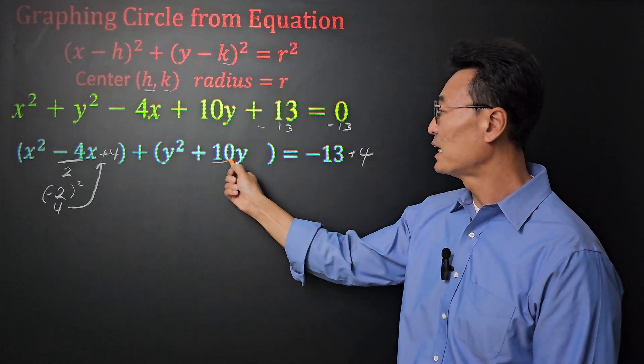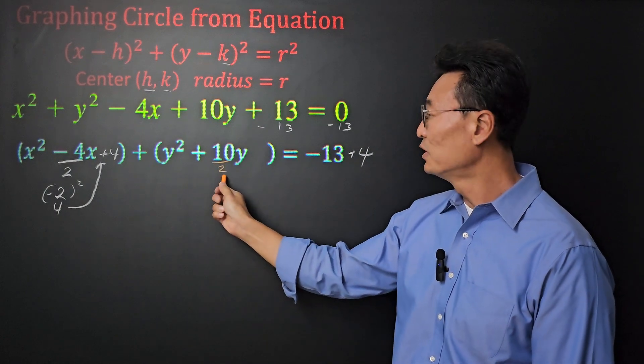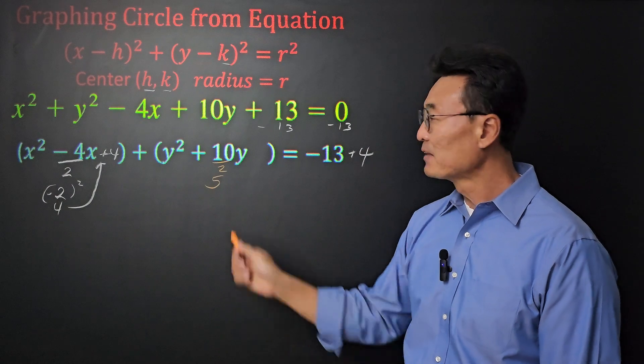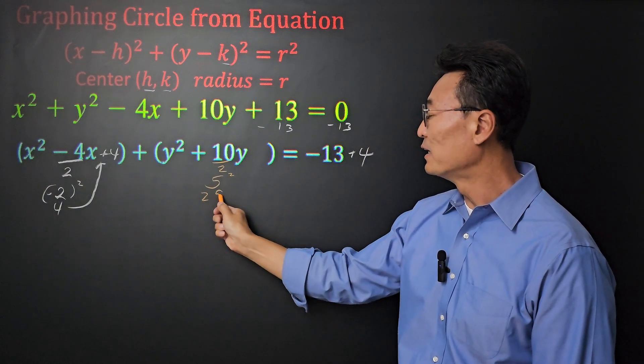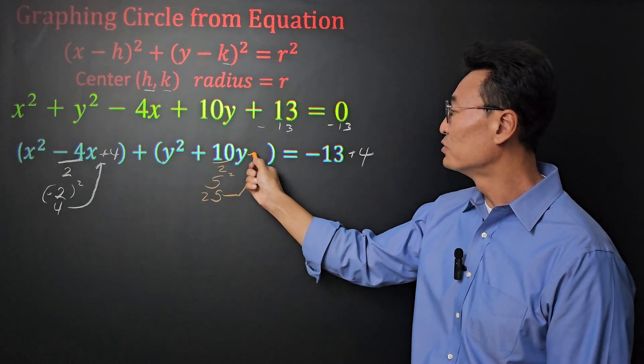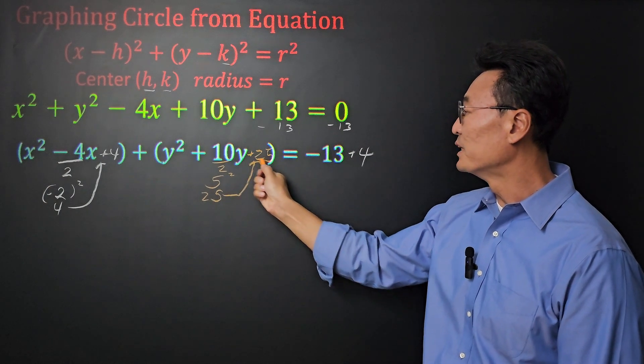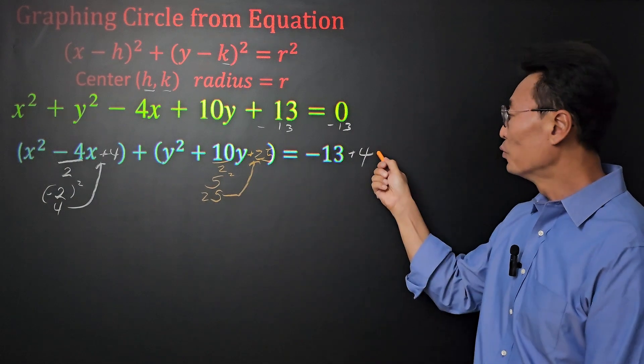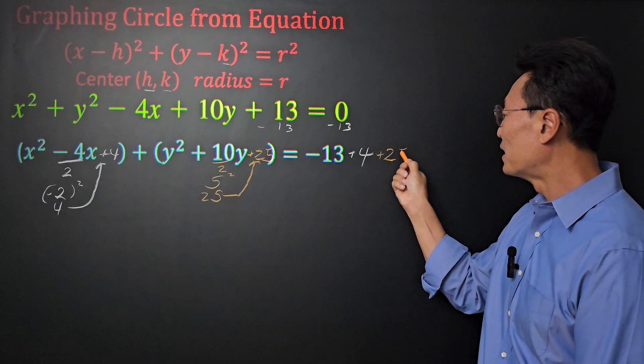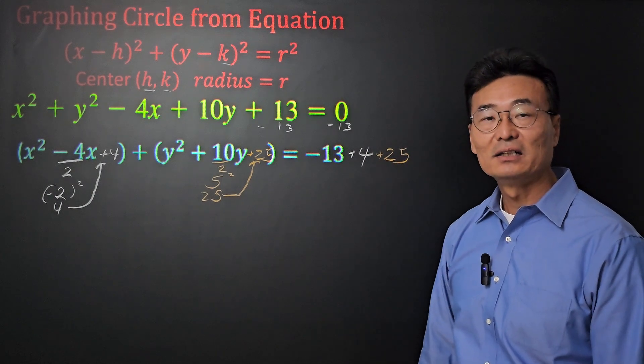Next, we're going to do the same, take that 10, divide it by 2, which gives us 5, and again we're going to square that, and we get a 25. We're going to take that 25, put it into that empty space that we had made, and by adding the 25 on the left side, we're going to add 25 on the right side of the equal sign as well.